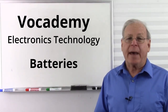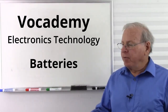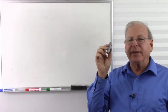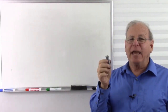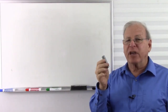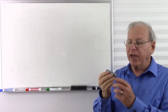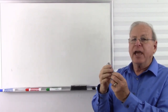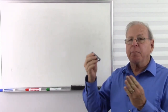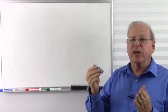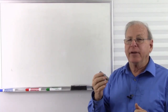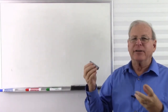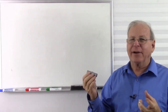Today I'm going to talk about batteries. When we pick up one of these, we often call it a battery, but the correct name would be a cell or a voltaic cell. It is a single entity that produces a voltage, and when we put multiple cells together, we get a battery. So this should be a cell, and several of them should be called a battery.